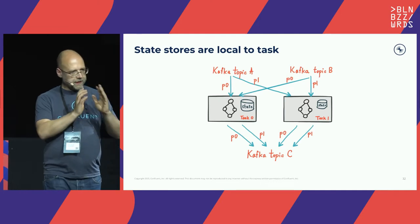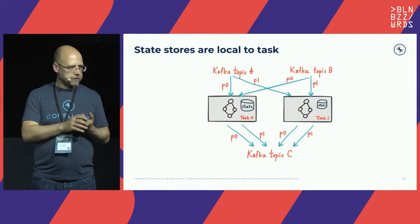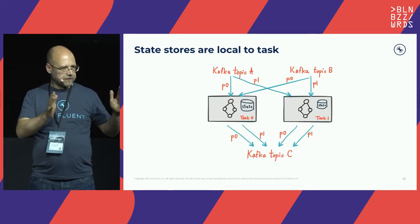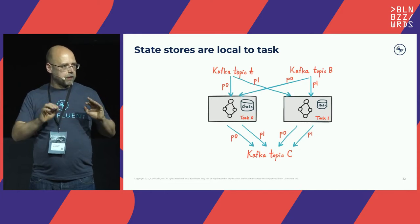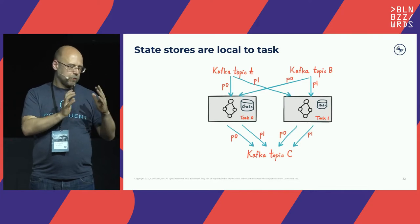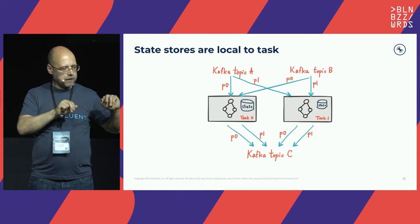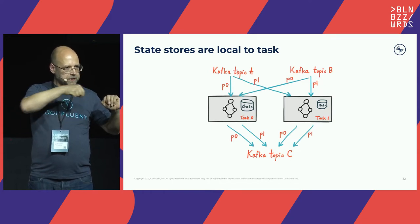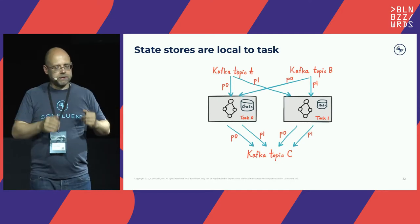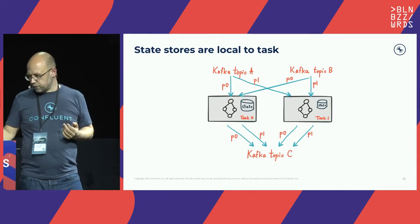State stores are always local to their tasks. With a stateful application having two stateful operations and six input partitions, you'll have 12 state stores. RocksDB is a lightweight data store, and keeping state local to each task gives us the freedom to move tasks from one compute instance to another easily. If we grouped state across different tasks, that portability would not be possible.